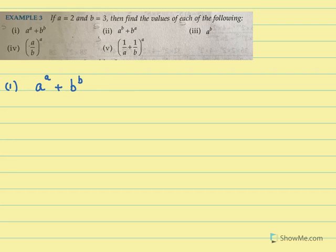Now we know A is equal to 2, so 2 raised to 2, and B is equal to 3, so it is 3 raised to 3. Now 2 raised to 2 is 2 into 2, that is 4, and 3 raised to 3 is 3 into 3 into 3, that is 27. So the answer for this is 31.